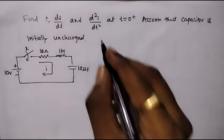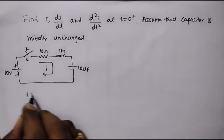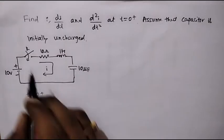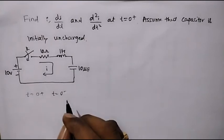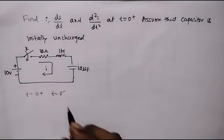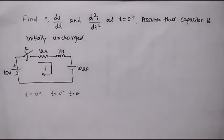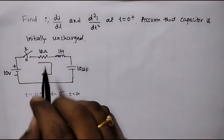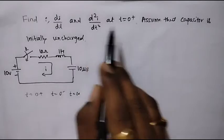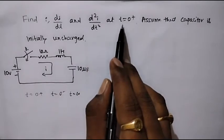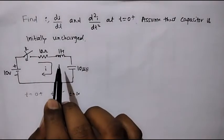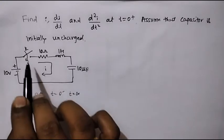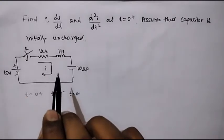We know that t equal to 0 plus is the period immediately after closing the switch, and t equal to 0 minus is the period just before closing the switch. In this example, we are supposed to calculate the current, its first derivative, and its second derivative immediately after closing the switch, that is at t equal to 0 plus. The first step is to apply KVL to the given circuit, assuming the switch is closed and considering all elements are present.